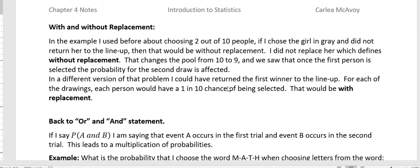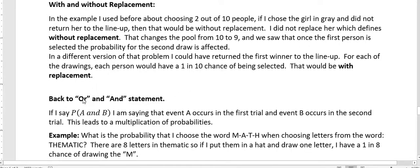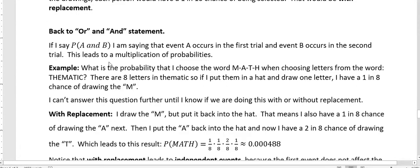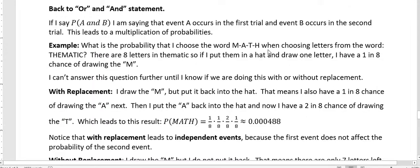So let's go back to this or and and statement thing. We talked about or statements in a previous video. And in the and statement, if I say the probability of A and B, I'm saying that event A occurs in the first trial and event B occurs in the second trial. And this leads to a multiplication of probabilities.